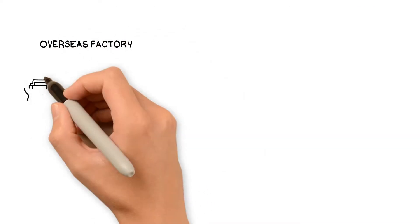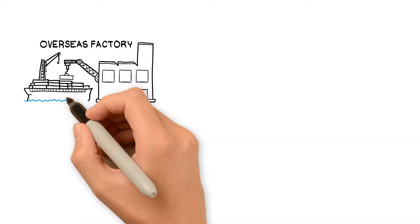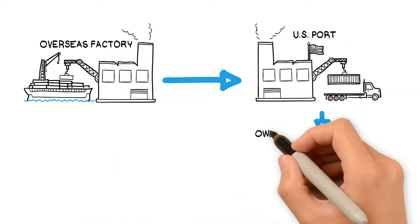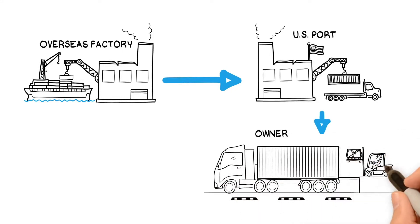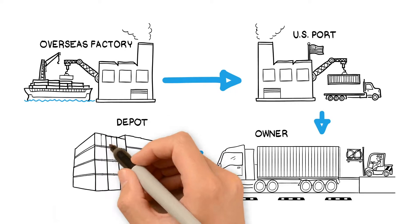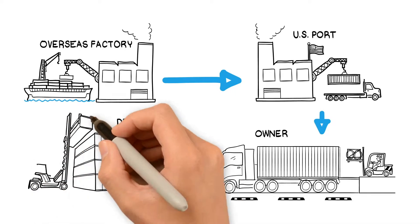The container's journey begins overseas, where it's manufactured, then shipped to our ports with cargo inside. It's then transported by truck or rail to the cargo owner's location, emptied, and then returned to a local depot for inspection.